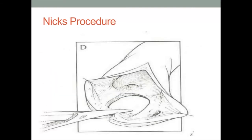The Nicks procedure is classified as a posterior enlargement technique and involves an incision down the commissure dividing the left and non-coronary leaflets. Limiting the incision to just the interleaflet triangle can enlarge the root sufficiently upwards of two to three millimeters. If greater enlargement is required, an incision can be carried down further into the anterior leaflet of the mitral valve and the roof of the left atrium.